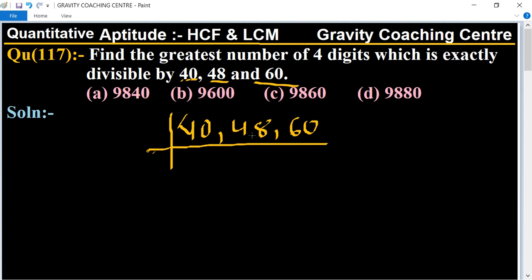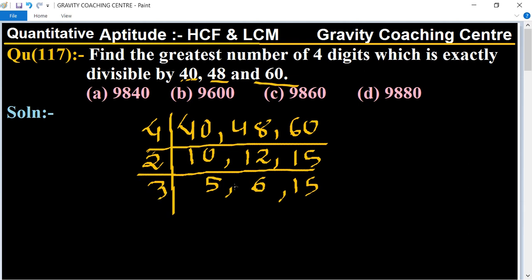First of all we will take the table of 4: 4 tens 40, 12 fours 48, and 15 fours 60. Again table of 2: 5 to 10, 6 to 12. And table of 3: 15 is divisible by 5 so 5 cancel, 3 to 6 and 5 to 15.